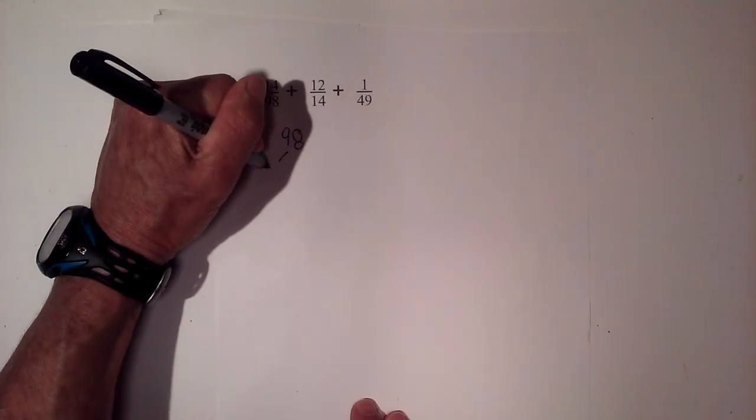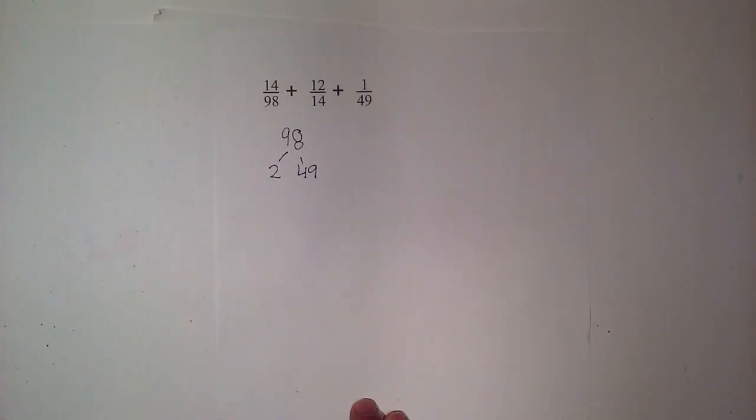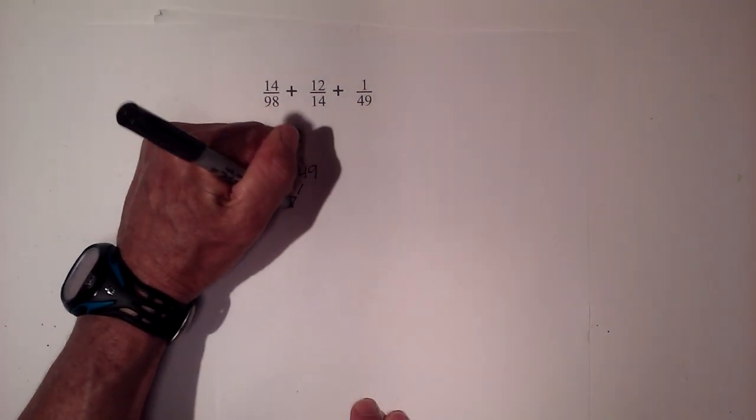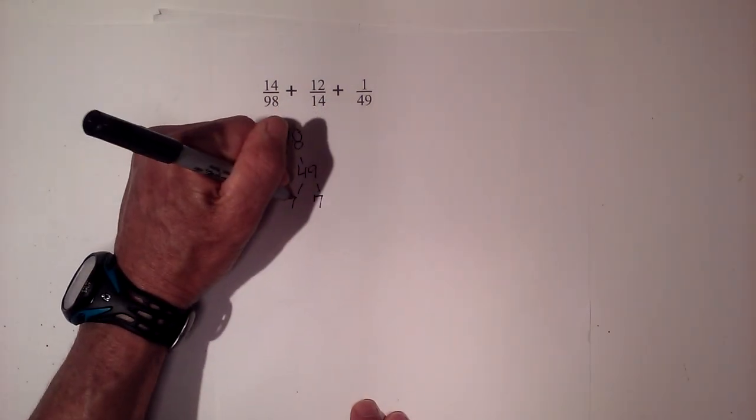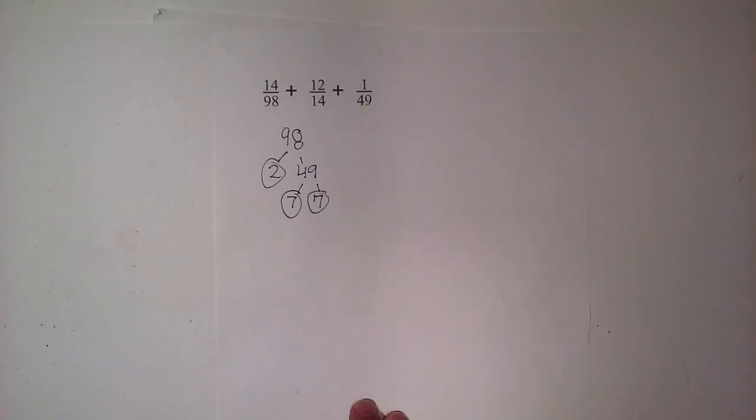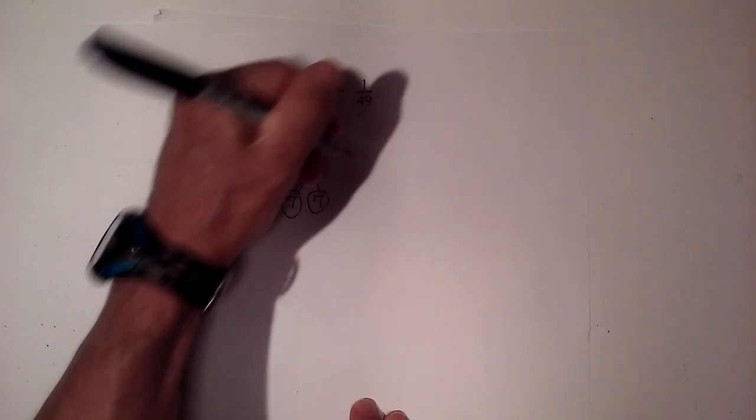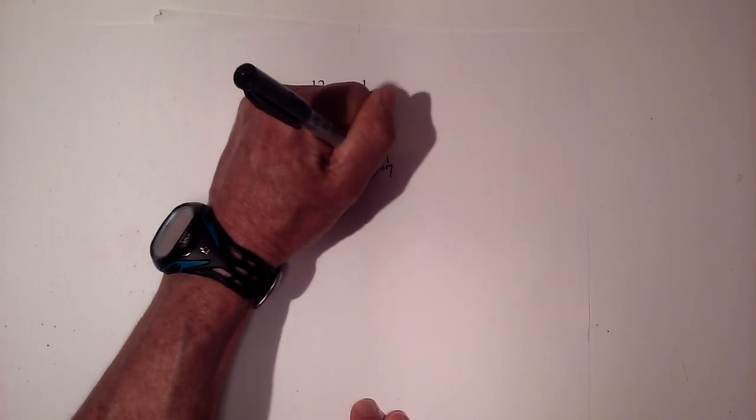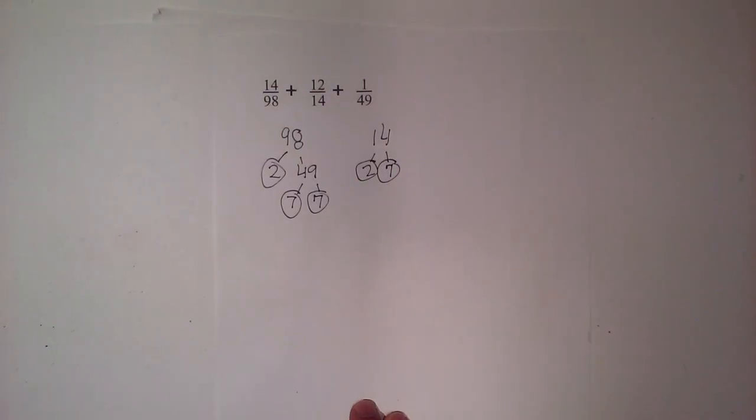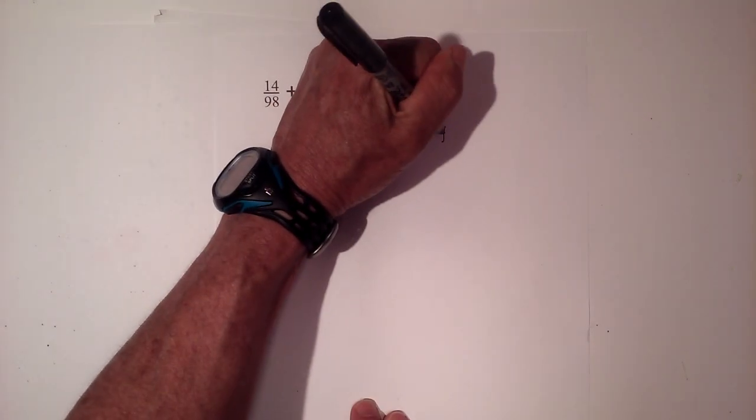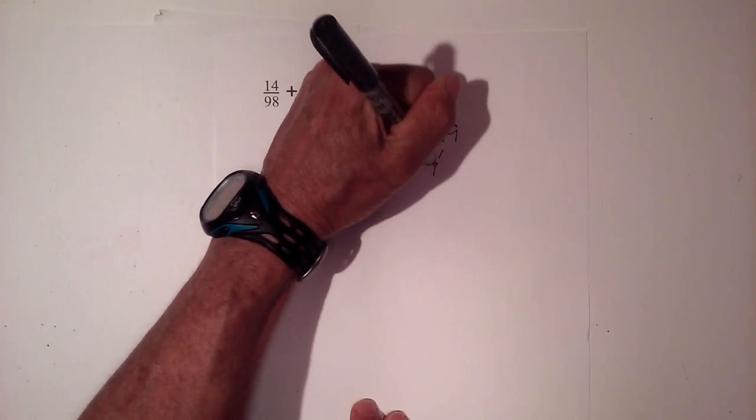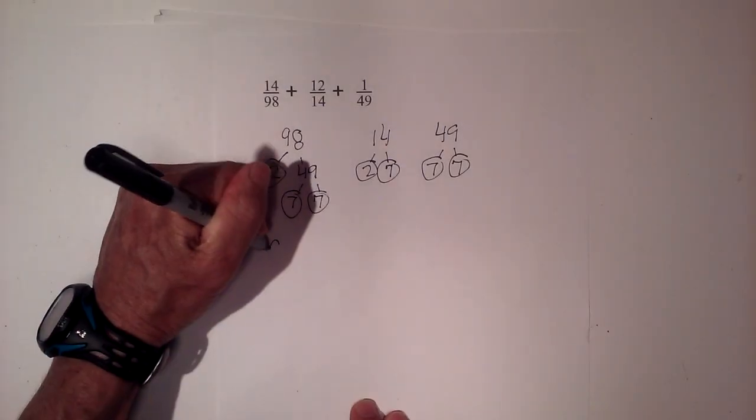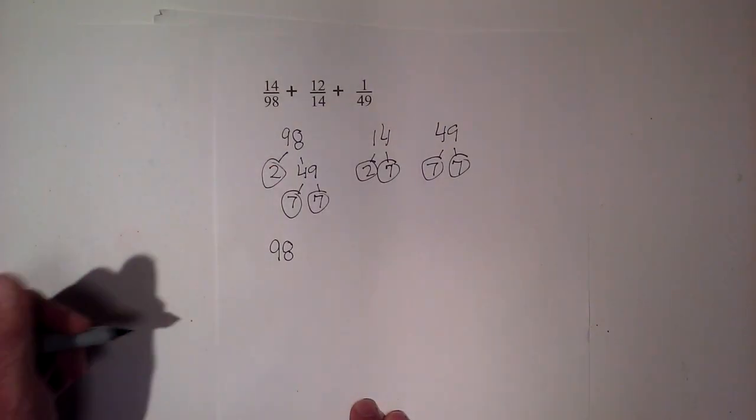2 times 49 equals 98. Circle the 2 because it is prime. Now 7 times 7 equals 49. Circle both 7's because they are prime. Now 14, it's a little bit easier, but we have 2 times 7. Circle both of these because they are prime. And now 49 is just 7 times 7. Circle the primes. Again, I'm going to go back and write down all the prime numbers just to avoid errors.